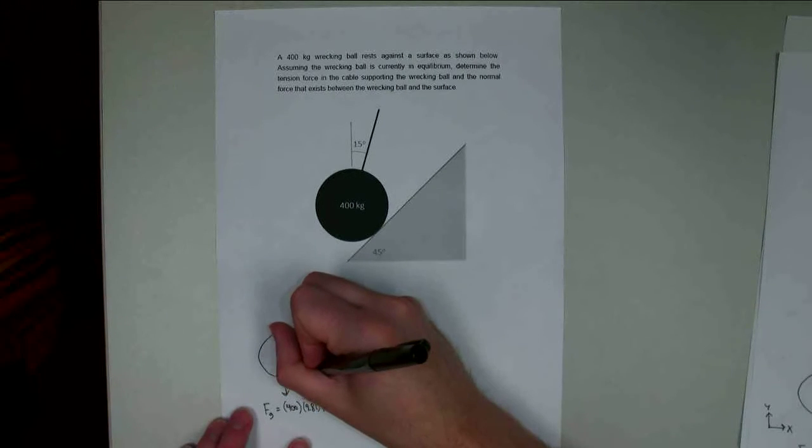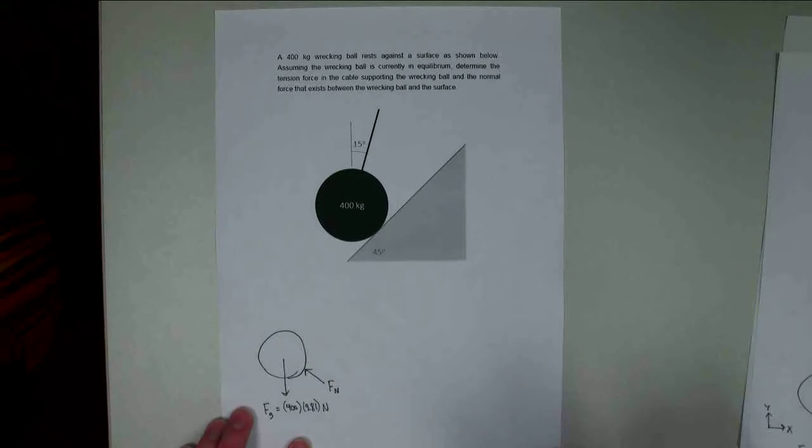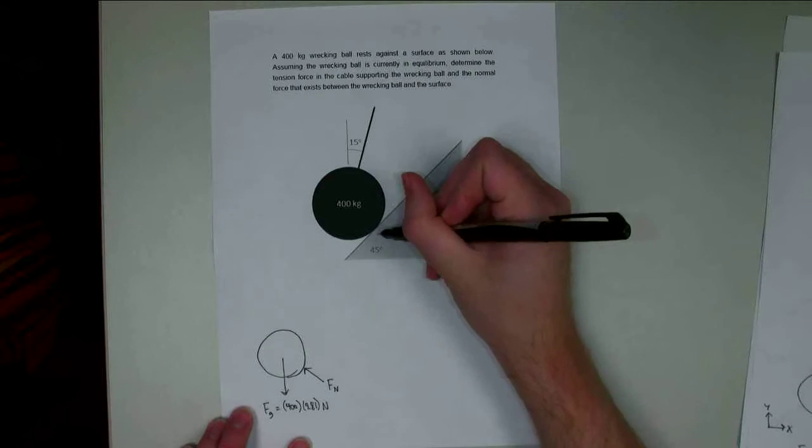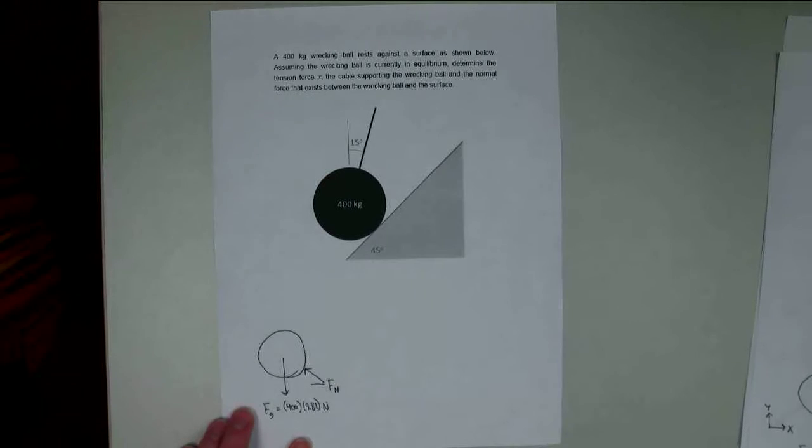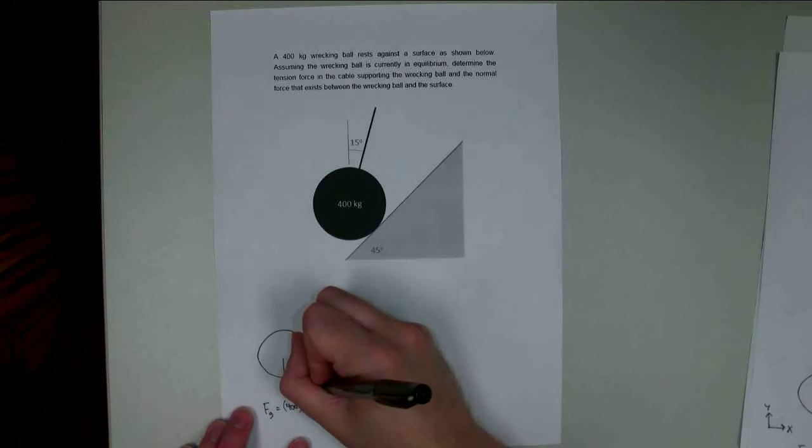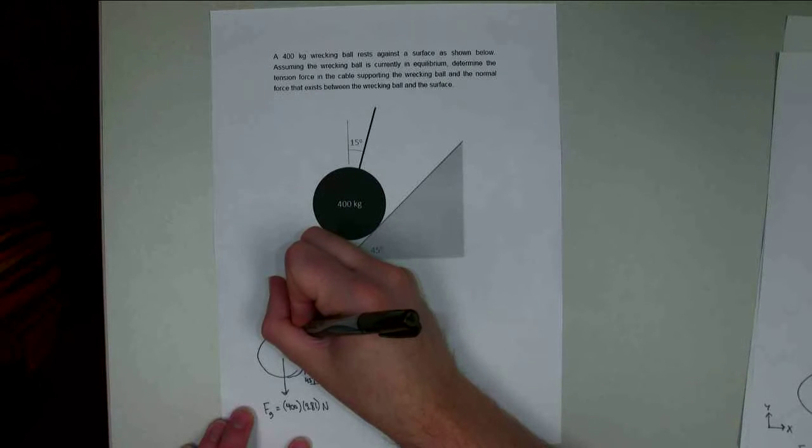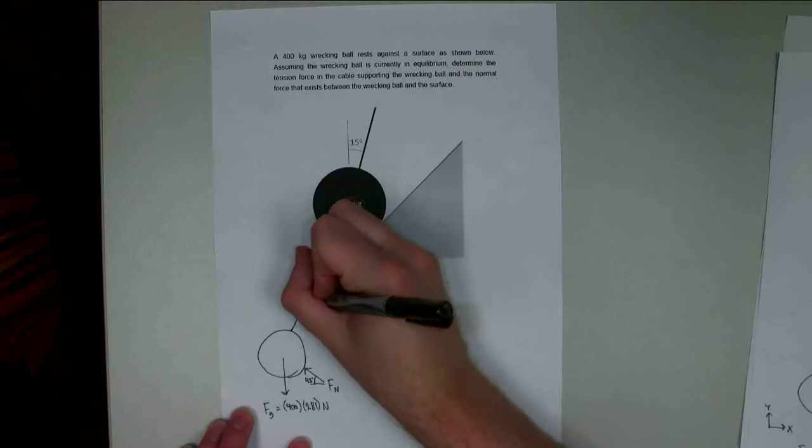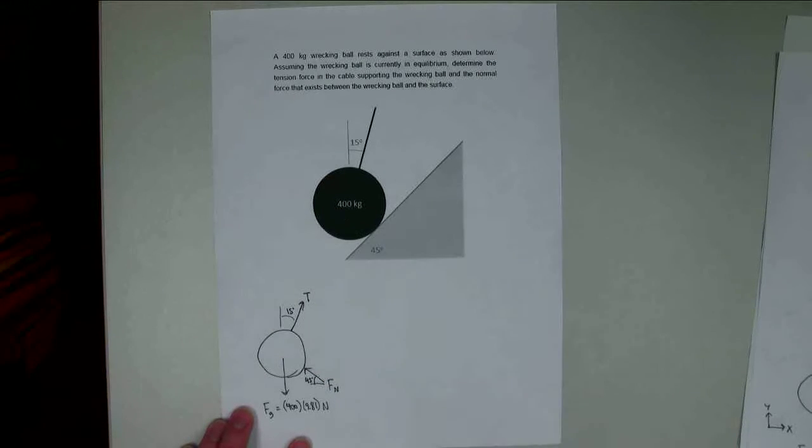I'm going to have a normal force, Fn, right here. That's going to be perpendicular to the surface, so this is going to be 45 degrees from either horizontal or vertical. And the tension force on the top, that's going to be 15 degrees from vertical.